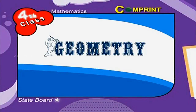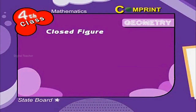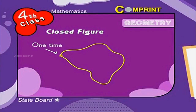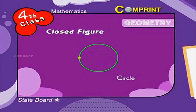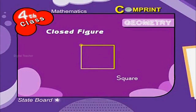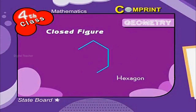Simple geometrical concepts. Now let us know about a closed figure and an open figure. A figure that does not intersect itself more than once is called a closed figure. Look at the examples: triangle, a circle, a square, a pentagon, and a hexagon.